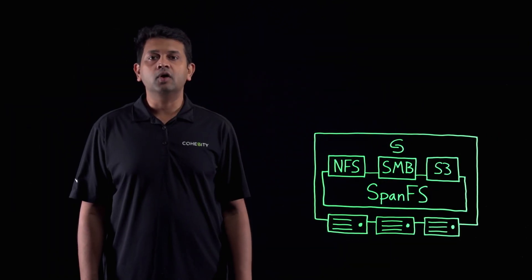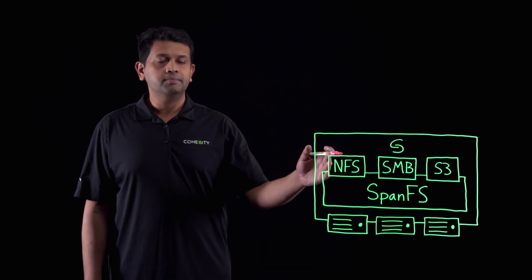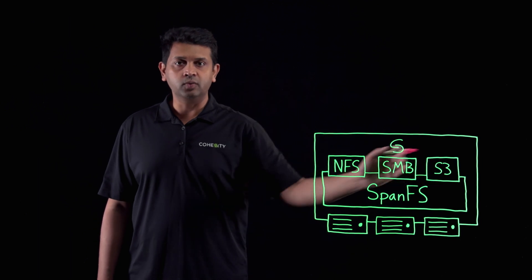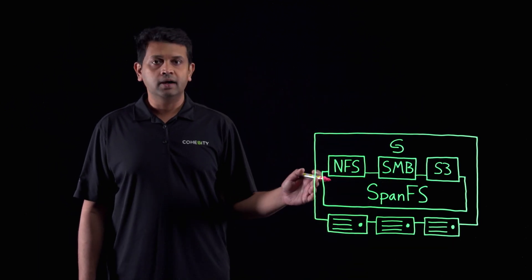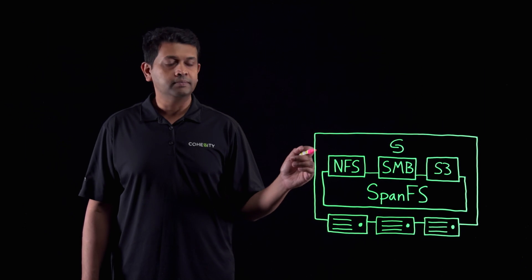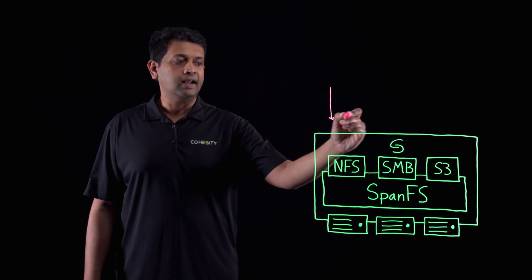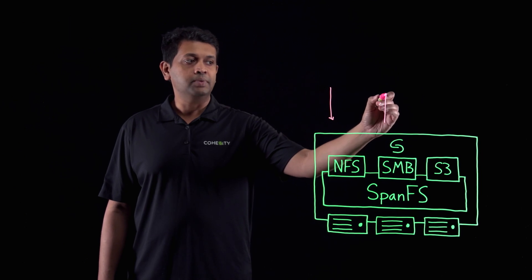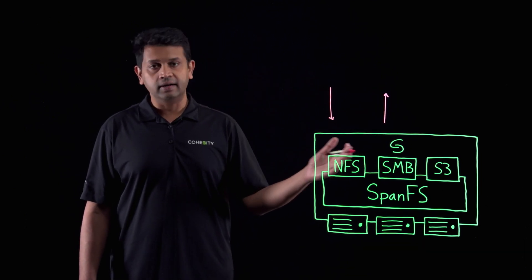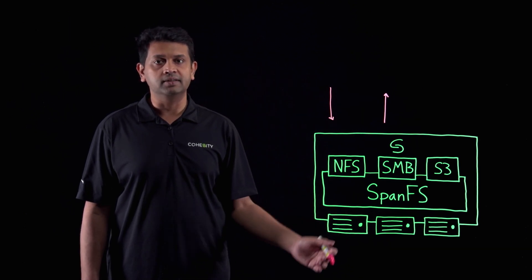The next advantage I want to talk about is multi-protocol access. Coeicity provides access to data via NFS, SMB, and S3. And we provide multi-protocol access with all three. So you can write data via NFS and read the data via SMB. That is similar to other NAS file systems. And we provide ID mapping via three different methods, all Active Directory-based.